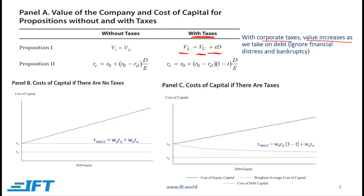the value increases as we take on more debt, and here we are ignoring financial distress and bankruptcy. So as D goes up, given a particular tax rate, the value of a leveraged firm goes up. So this is Proposition 1 with taxes.